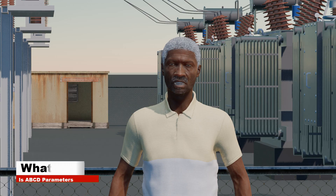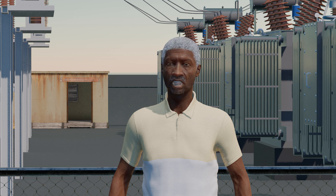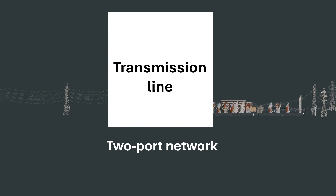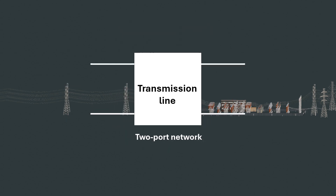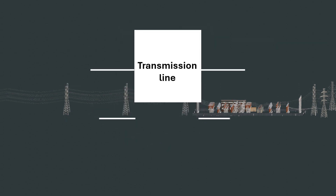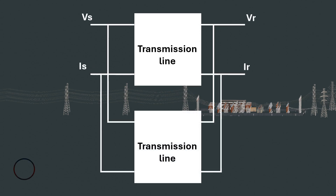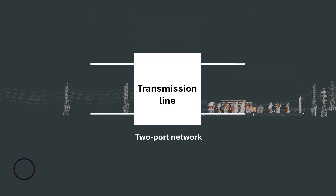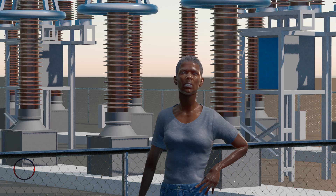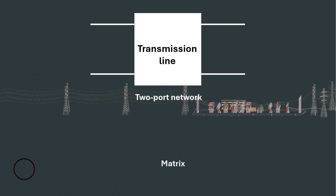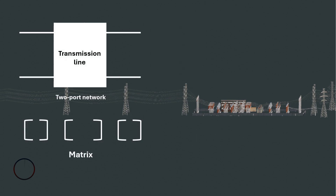ABCD parameters are usually represented in a two-port network model. In electronics or electrical engineering, a two-port network is a kind of four-terminal network or quadrupole that connects to external circuits. A two-port network model is used in mathematical circuit analysis techniques to isolate portions of larger circuits, and is regarded as a black box with its properties specified by a matrix of numbers. The network is described by a two-by-two square matrix of complex numbers. The common models used are referred to as Z parameters, Y parameters,